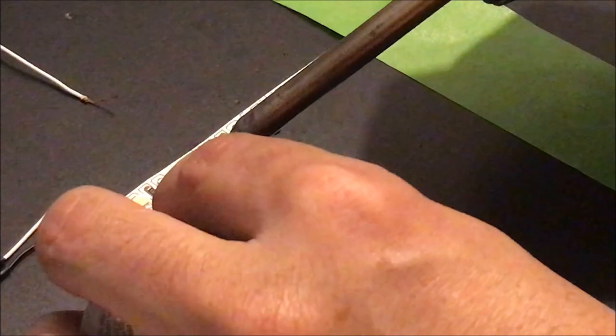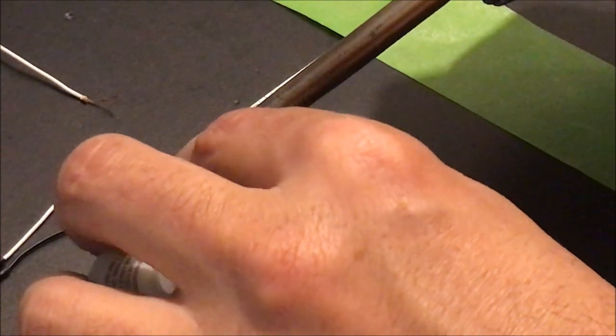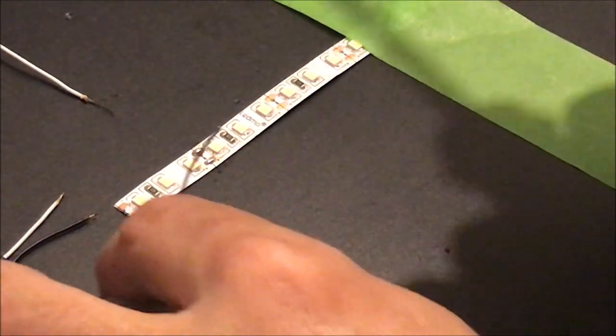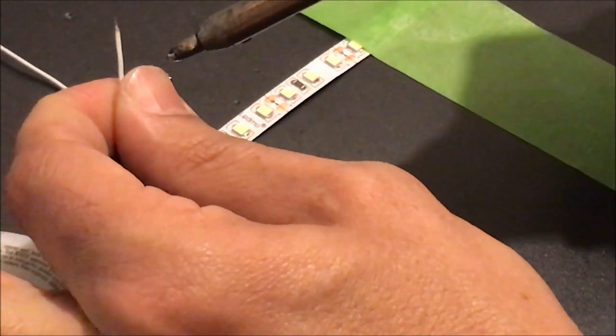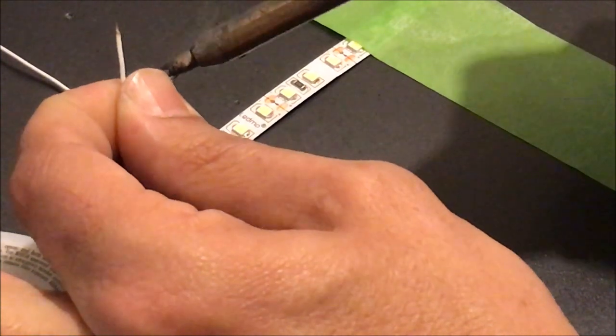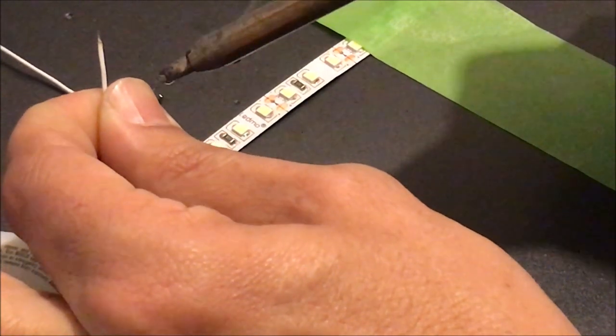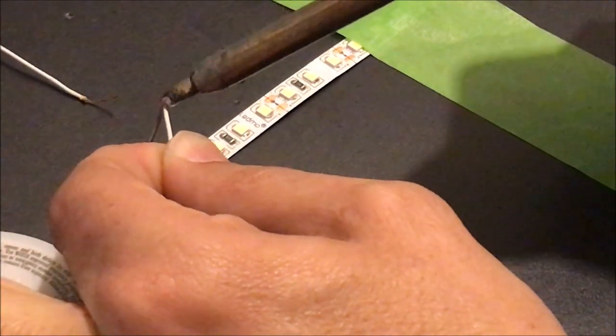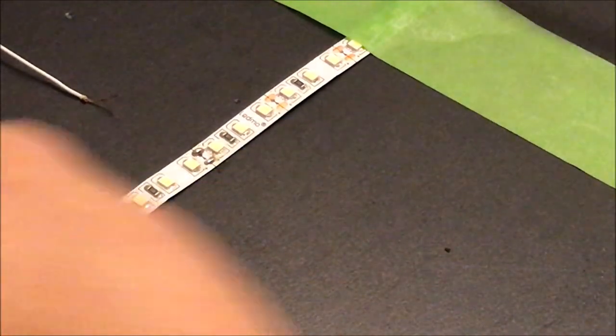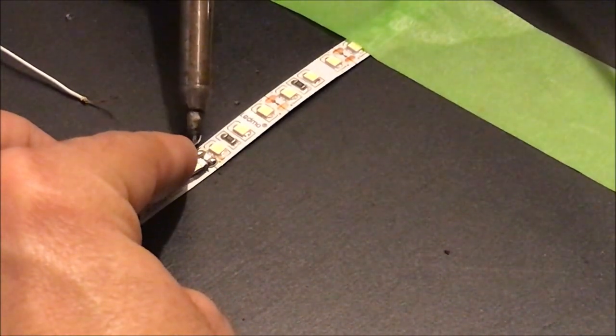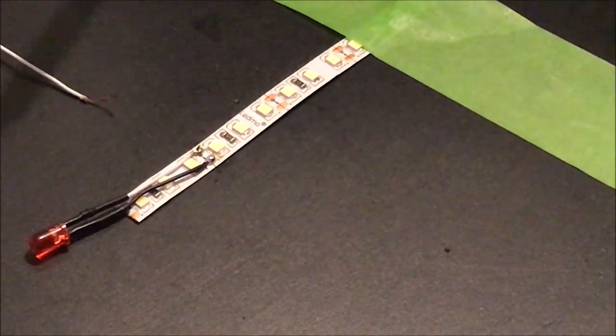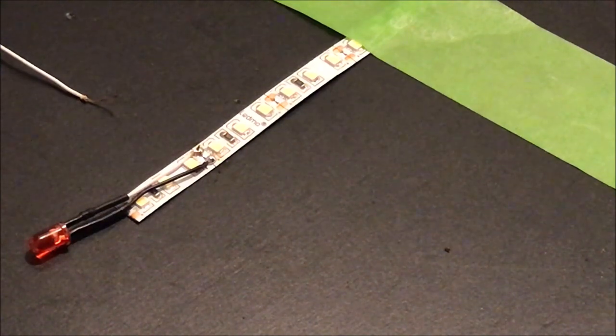All right, we've got our solder on. Next thing I'm gonna do is I'm going to tin the leads from the LED. That's just gonna be adding a little bit of solder to kind of prevent corrosion to the end of that wire. After you've done that, you can just put it down on the solder you've already put on, get it melted a little bit, and have it soldered in place. All right, that is now connected to the strip.